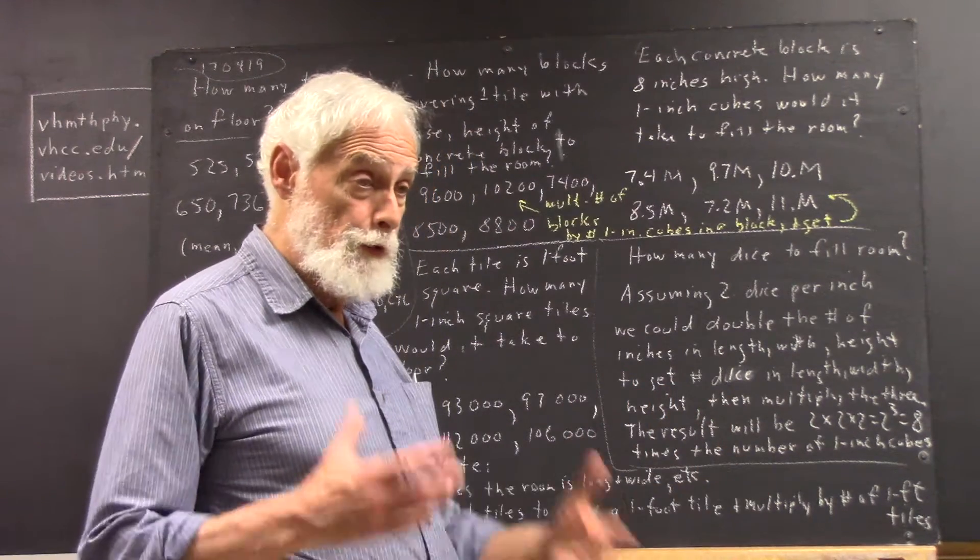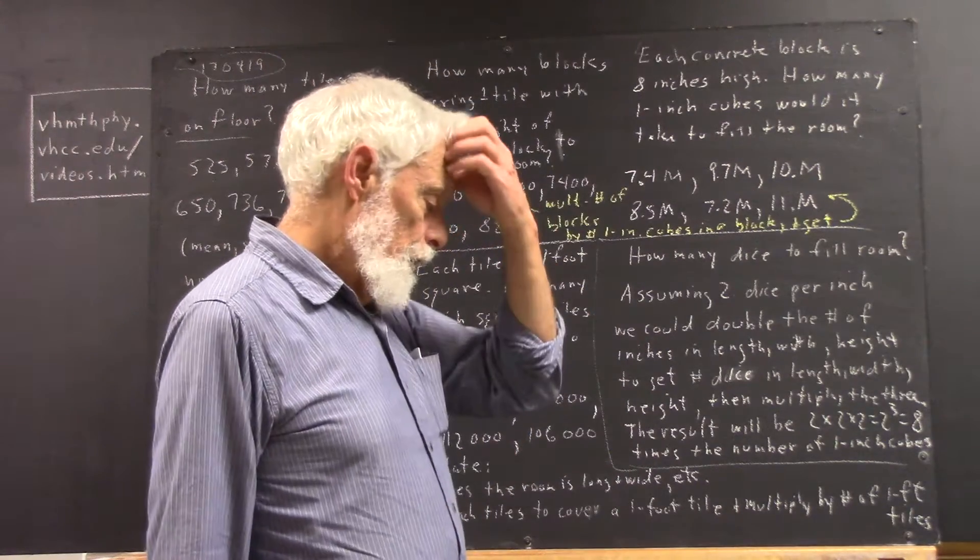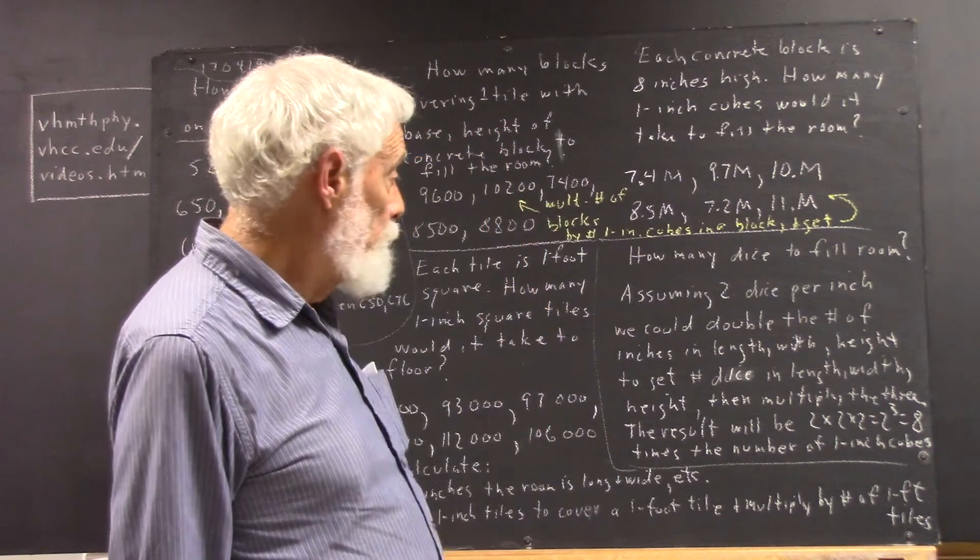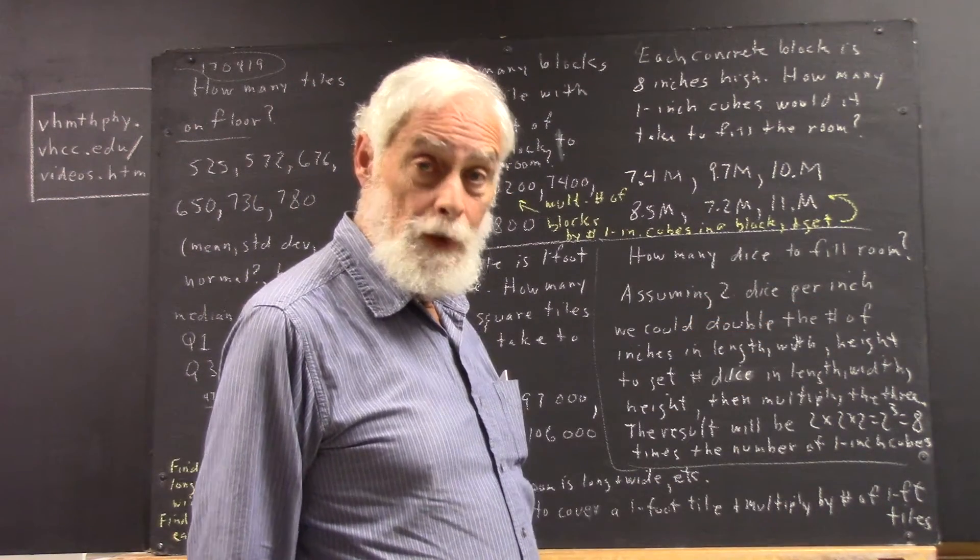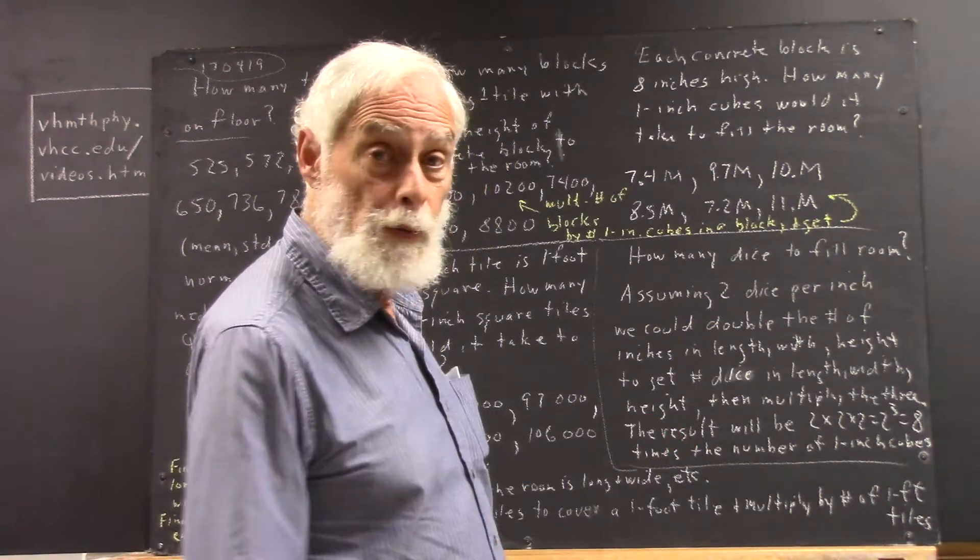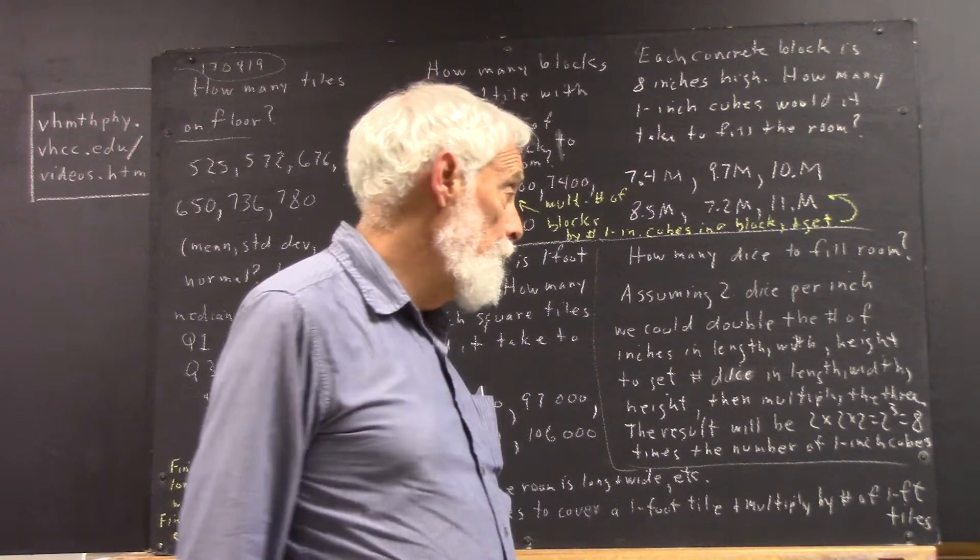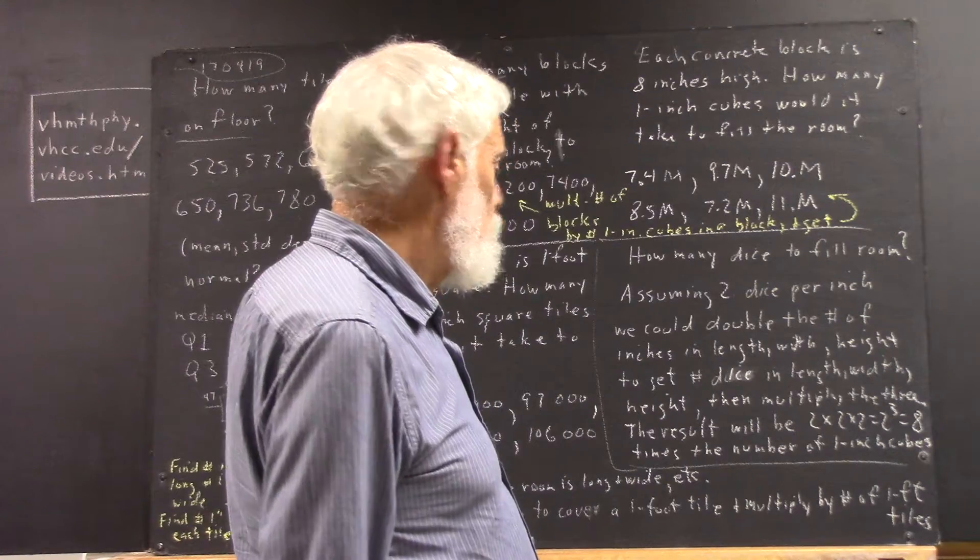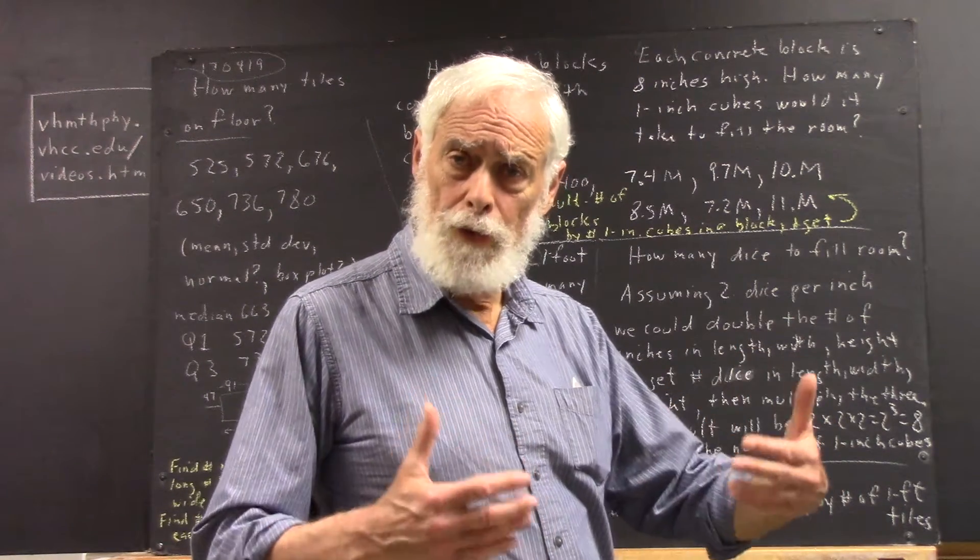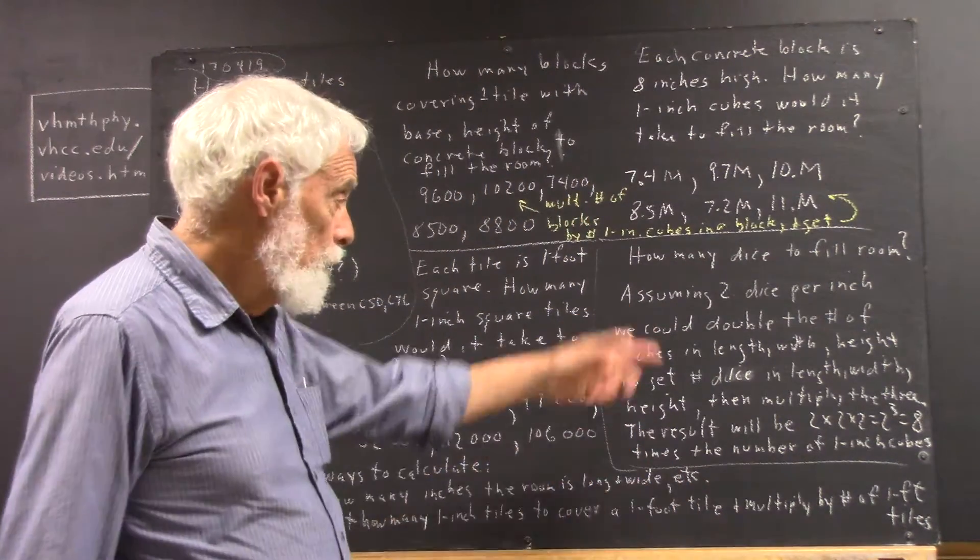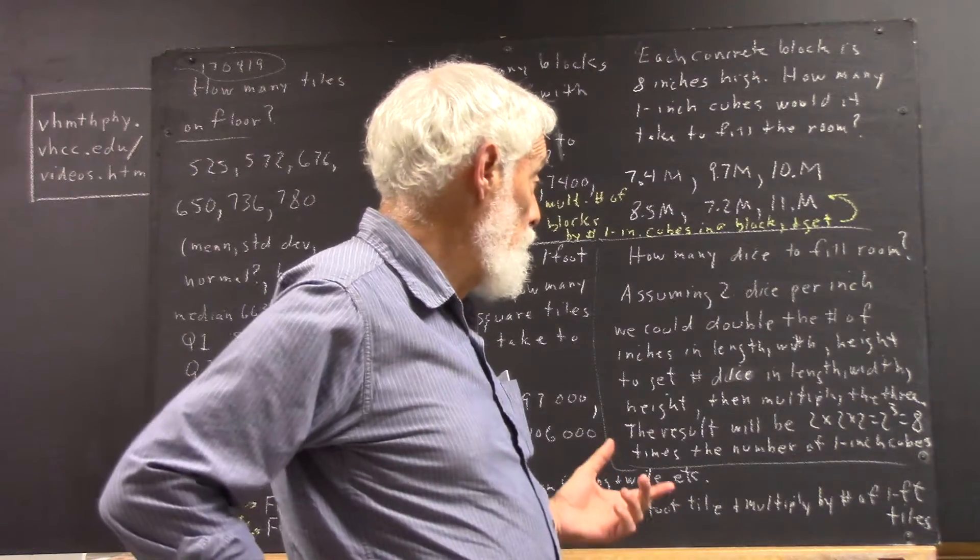Now some people assumed that there were two dice per inch. Now whether that's what you observed or not, let's go with that assumption. If there are two dice per inch, then how could we calculate this? Think about that. You should pause, think about it, come back. Okay, well, I'm glad you're back. Hopefully you paused and thought about it.